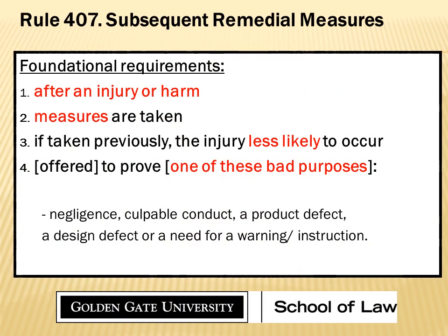Think about subsequent remedial measures. You can break down the foundational requirements — I could put up the rule, or put it up as it might appear in your outline: after an injury or harm, measures are taken that, if taken previously, would make it less likely to occur — offered to prove one of these bad purposes. In product liability suits, it includes product defect and design defects, but it's essentially the same: to prove negligence, wrongfulness, or culpable conduct. These foundational requirements belong to the opponent — the one objecting — who says, they are about to put on subsequent remedial measures evidence that meets the requirements of this rule. I must stop them.